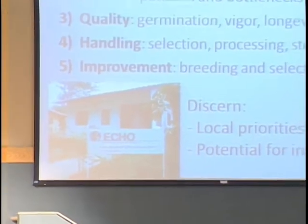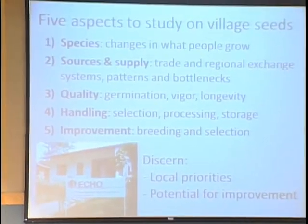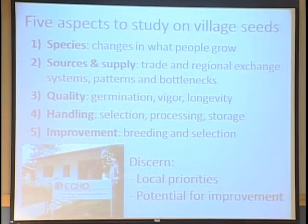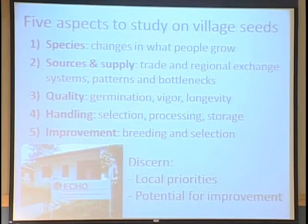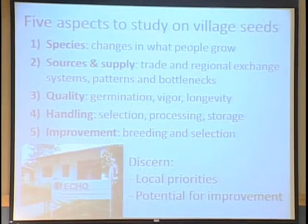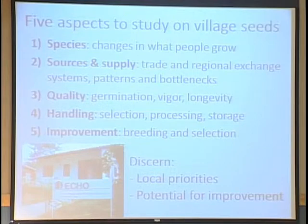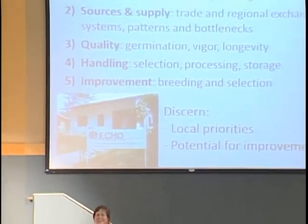This agricultural biodiversity is a critical part of their nutritional and food security because they're able to produce proteins, starches, and even oilseeds. I want to talk about five aspects we might study in village seeds. This is a wonderful thing for student projects — if you're interested in doing a research project, this can be a very tidy project that produces useful outcomes for local people. One aspect is studying species: what is it that people are growing, and how does this change over time?